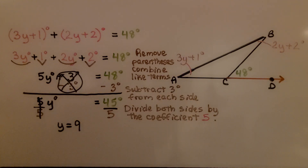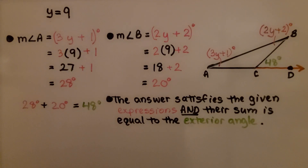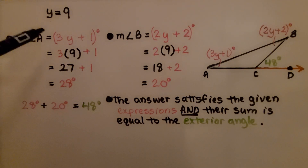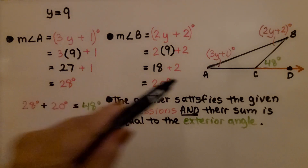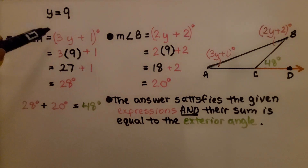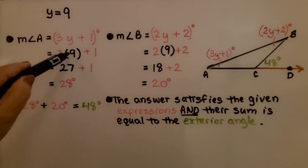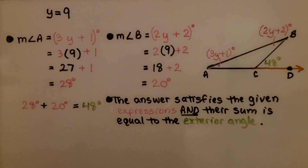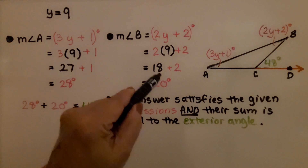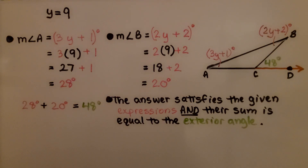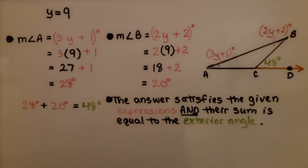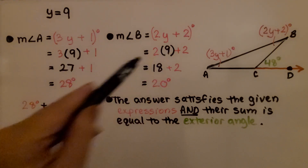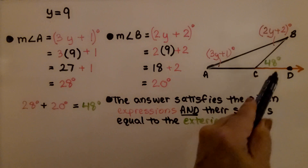Now we can solve for the angle measures. Knowing y equals 9, we substitute into the expressions for angle A and angle B. For angle A: 3 times 9 plus 1 is 27 plus 1, which is 28 degrees. For angle B: 2 times 9 plus 2 is 18 plus 2, which is 20 degrees. Checking: 28 degrees plus 20 degrees equals 48 degrees. The answer satisfies the given expressions and their sum equals the exterior angle.